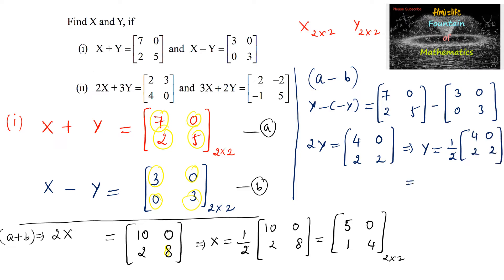We divide each element of the matrix by 2. So Y equals 1/2 times [4, 0; 2, 2]: 4/2 is 2, 0/2 is 0, 2/2 is 1, and 2/2 is 1. So matrix Y equals [2, 0; 1, 1] and matrix X equals [5, 0; 1, 4].